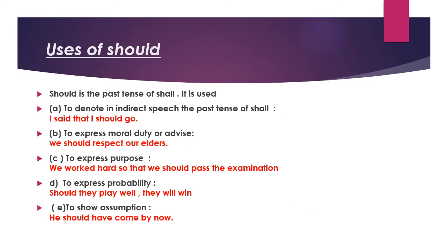The next modal is 'should'. 'Should' is the past tense of 'shall'. It is used in these conditions: first, to denote in indirect speech the past tense of 'shall' — 'I said that I should go.' Second, to express moral duty or advice — we always use 'should' for moral duties and advice, like 'We should respect our elders,' 'We should obey our teachers,' 'We should help the poor.' Third, to express purpose — 'We worked hard so that we should pass the examination.'